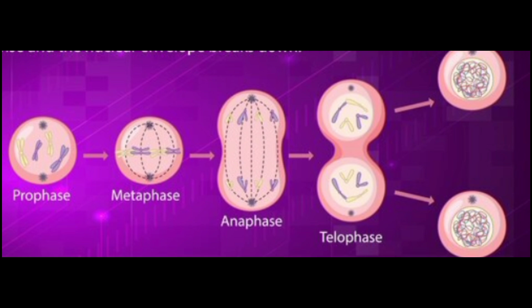The fourth phase is telophase — the nuclear membrane starts to form around each set of chromosomes, creating two nuclei. The fifth stage is cytokinesis — the cell's cytoplasm divides, resulting in two identical daughter cells.